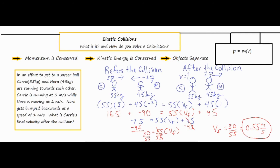That's the majority of the physics thinking done. Now it's just plugging in numbers and multiplying to simplify. The whole left side condensed down to 75 as the total momentum for the entire collision. Afterwards, I had 55 times VF, because we don't know Carrie's velocity after the bump, plus the momentum of Nora, which was 45. I subtracted 45 from both sides and divided by 55, so it turns out that Carrie's speed is 0.55 meters per second.